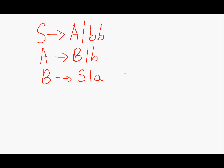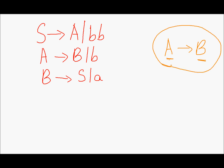Unit productions are productions of the type A produces B — so we have one non-terminal on the left and one non-terminal on the right. Productions of this type are called unit productions, and we shall remove them from this grammar.